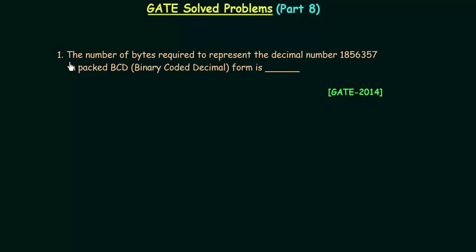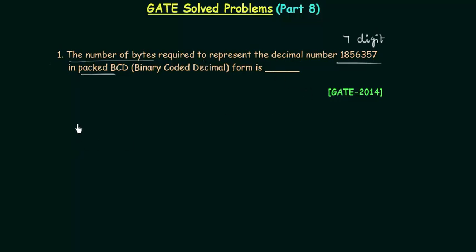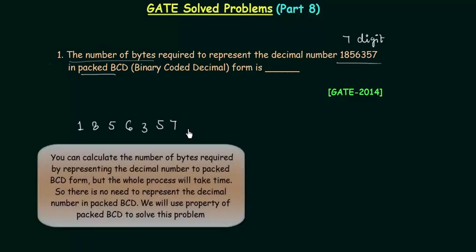In the first problem, we have to find the number of bytes required to represent the decimal number 1856357. This is a seven-digit decimal number in packed BCD form. The decimal number is 1856357, and we have to represent it in packed BCD form and calculate the number of bytes required.